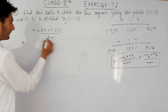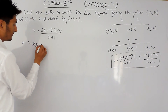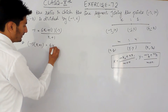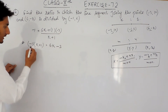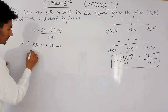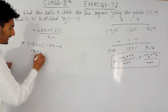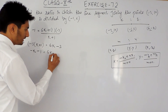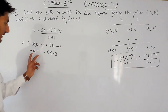Now cross-multiplying: -1 multiplied by (k + 1) on one side equals 6k + (-3) on the other side. Expanding the left side: -1 times k gives -k, and -1 times 1 gives -1. So we have: -k - 1 = 6k - 3.